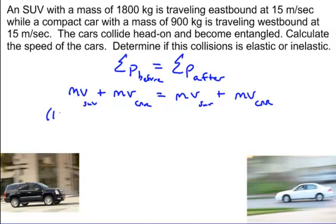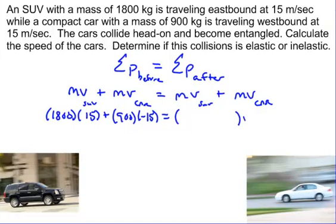So what am I going to do with my mass? My mass is 1800, and that SUV is going 15 meters per second, but I'm going to call that positive 15 because it's going to the right. The other one is, the other car is 900 kilograms, and he's going negative 15. I've got to make sure I put my vectors in there for velocity because velocity is a vector quantity.